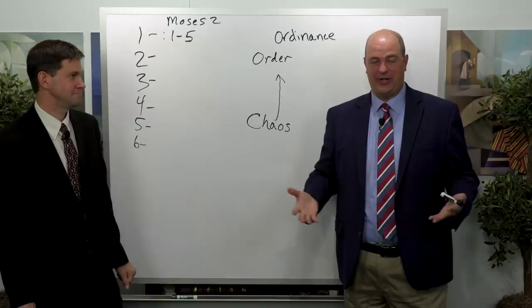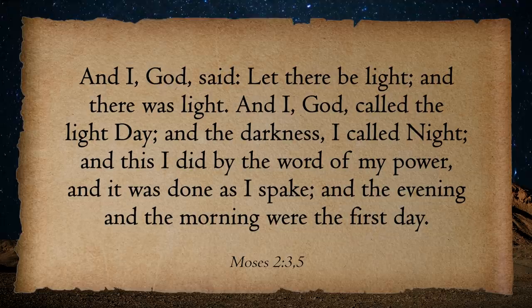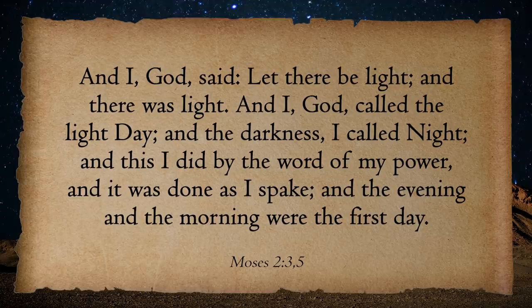Now let's jump into the rest of day one. The earth is organized, brought together, without form, void, and then in verse 3: 'And I, God, said, let there be light, and there was light, and I, God, called the light day, and the darkness I called night, and this I did by the word of my power, and it was done as I spake, and the evening and the morning were the first day.'